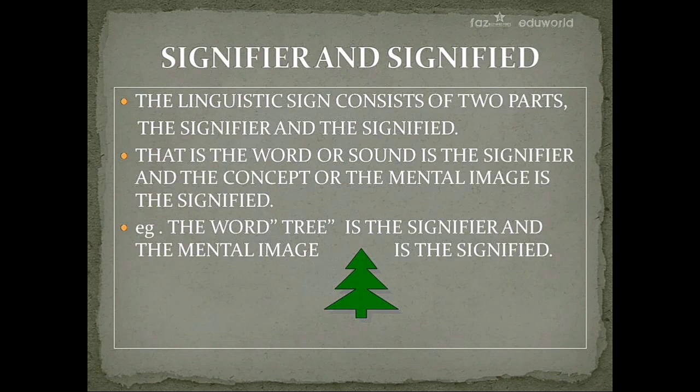The next and very important distinction is signifier and signified. The linguistic sign consists of two parts: the signifier and the signified. The word or sound is the signifier, and the concept or mental image is the signified. For example, the word 'tree' is the signifier, and the mental image of a tree is the signified.